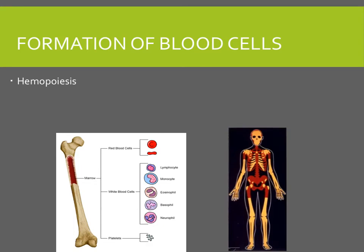Hemopoiesis, also known as hematopoiesis, is the process by which the formed elements of the blood develop. The formed elements include red blood cells, white blood cells, and platelets. The formation of these blood cells occurs in the red marrow of the bones.